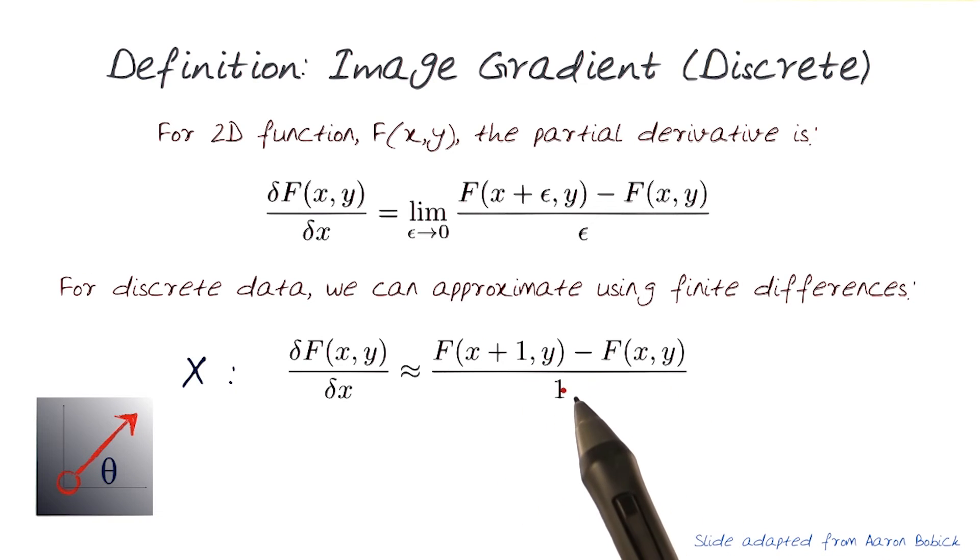keeping y the same and approximating with a difference like this. This is, in essence, what we just did in the previous cases of 1D examples when we just took one row and subtracted from the other one.